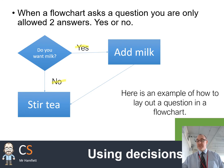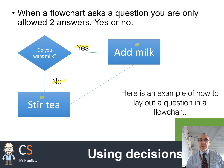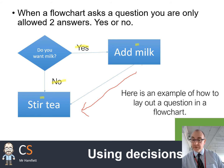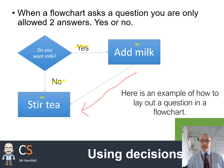If the answer is yes, we'll do one thing — which in this case is add milk. Otherwise, we stir the tea. Notice that we have a line going from 'add milk' over to 'stir tea'. So basically, once we've added the milk, we want to continue on with the rest of the algorithm — the rest of the flowchart — which is why there's an arrow going back.